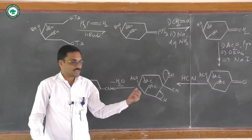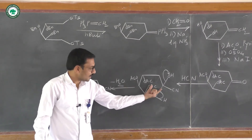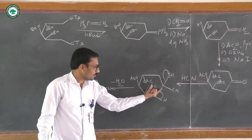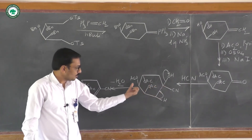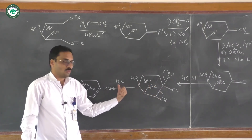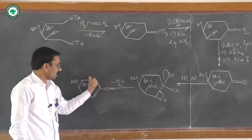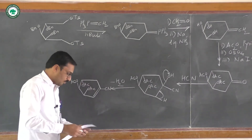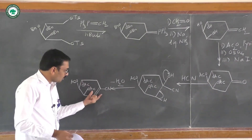In the next step, this cyanohydrin derivative undergoes removal of a water molecule, resulting in the formation of a compound in which the double bond is in conjugation with the cyano (CN) group.